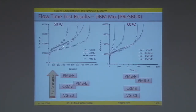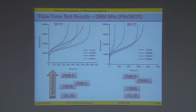Coming to the flow time test results of the DBM mix — a microstrain versus time plot at 50°C and 60°C — PMB plastomer outperformed every other binder, while CRMB and PMB elastomer showed more or less similar performance, with one being better than the other at different durations. VG30 was again the least performing one.